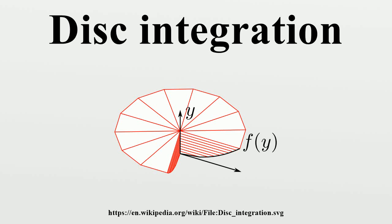Disk integration, also known in integral calculus as the disk method, is a means of calculating the volume of a solid of revolution of a solid-state material when integrating along the axis of revolution. This method models the resulting three-dimensional shape as a stack of an infinite number of disks of varying radius and infinitesimal thickness. It is also possible to use the same principles with washers, instead of disks, to obtain hollow solids of revolutions.